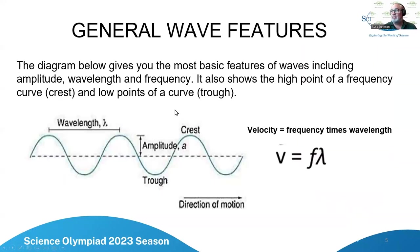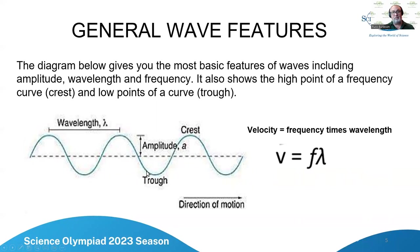Let's talk about general wave features. Here's a diagram showing the wavelength, the amplitude — which goes from equilibrium to the crest — and the trough, which is the minimum. This is obviously a periodic wave, and we also see the direction of motion.